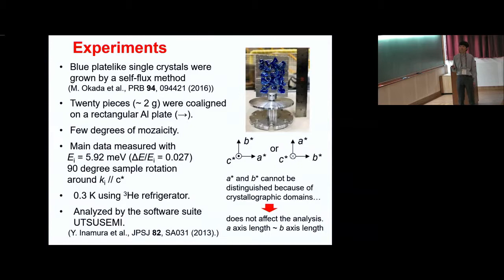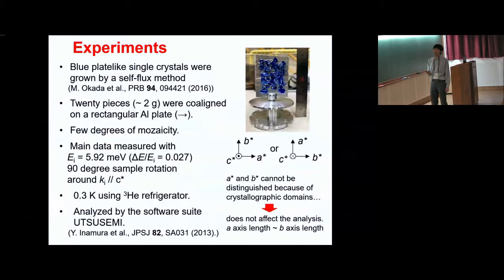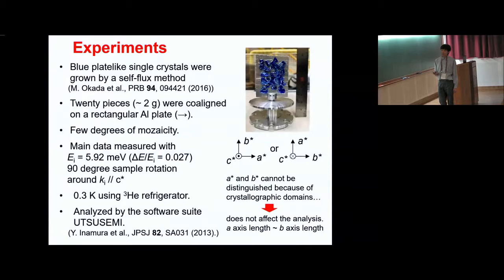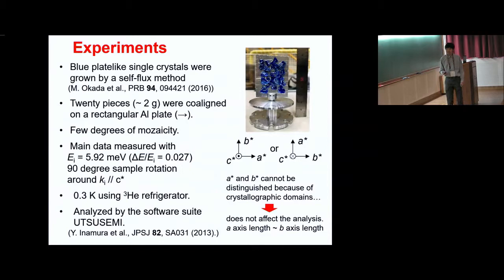However, this does not affect the analysis, since the A-axis length and B-axis length are almost the same. Since many crystals are co-aligned on the aluminum plate, there are a few degrees of mosaicity. Main data were measured with an incident neutron energy of 5.92 meV, with an energy resolution of almost 3% at the elastic line. The neutron beam was inserted along the C-star direction, and the samples were rotated for almost 90 degrees around this direction. The sample was cooled to 0.3 K using a helium-3 refrigerator, and all data were analyzed using the software Utsusemi.